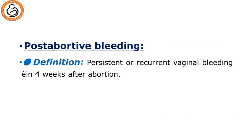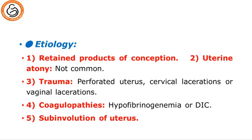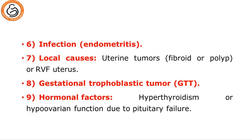Post-abortive bleeding: by definition, resistant or recurrent vaginal bleeding within four weeks after abortion. Etiology includes retained products of conception, uterine atony (not common after abortion), trauma such as perforated uterus, cervical or vaginal lacerations, coagulopathy like hypofibrinogenemia or DIC complicating septic abortion, sub-involution of the uterus, infection causing endometritis, and local causes in the uterus like fibroids, polyps, or retroverted fixed uterus. We should also exclude gestational trophoblastic tumor and hormonal factors like hyperthyroidism or hypo-ovarian function due to pituitary failure.